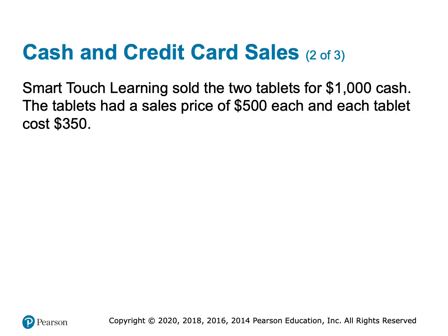We sold two tablets for $1,000 cash, so each tablet has a $500 selling price and the two tablets together total $1,000. Remember from Learning Objective 2 that the tablets each cost us $350. So the selling price is $500 and our cost is $350.